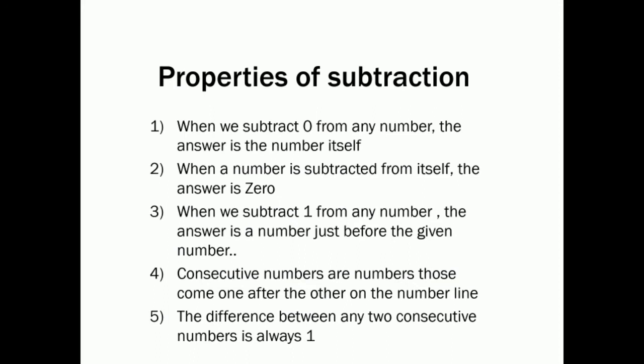Nine minus nine equals zero. Third property: when we subtract one from any number, the answer is the number just before the given number. For example, six minus one equals five. Five is the number before six because when we subtract any number with one, we will get the number before it.